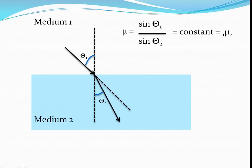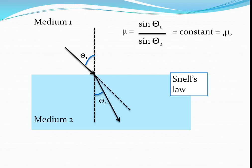If the light ray is coming from medium 1 into medium 2, the refractive index will be 1mu2. 1mu2 represents the refractive index of medium 2 with respect to medium 1. So if medium 1 is air and medium 2 is glass, sin θ1 by sin θ2 will represent the refractive index of medium 2. This particular law — that sin θ1 by sin θ2 is constant — is called Snell's law, as you might already have heard.